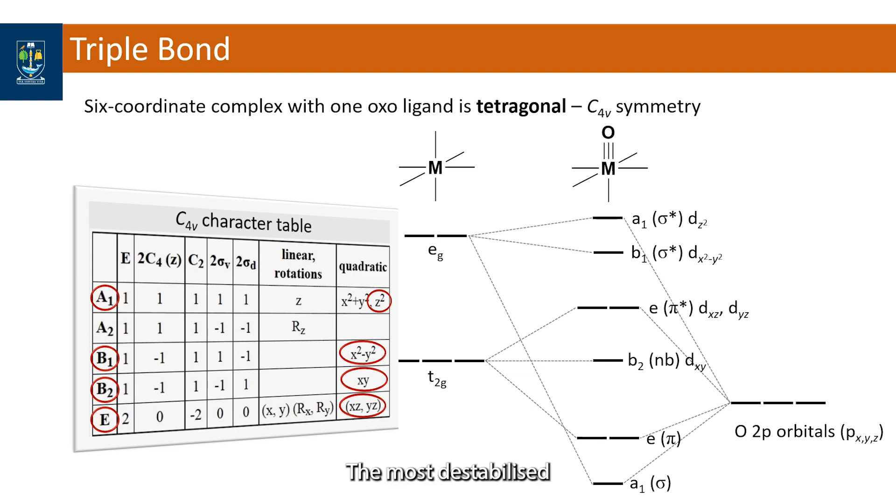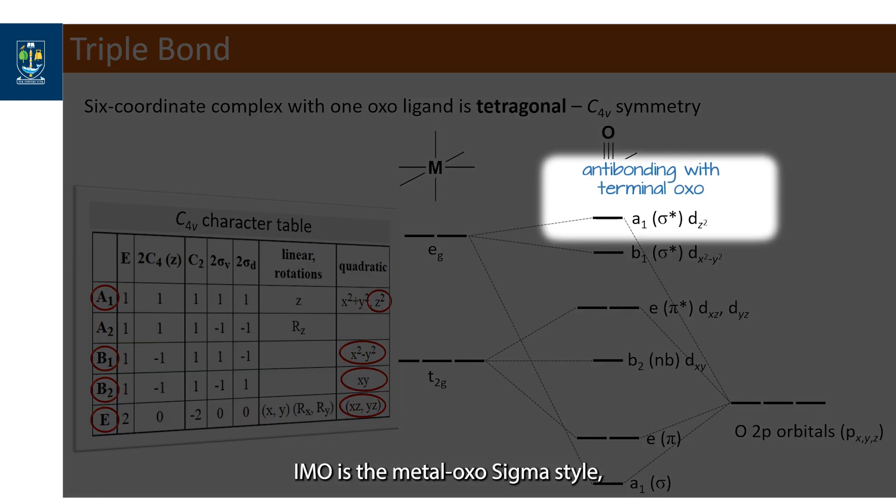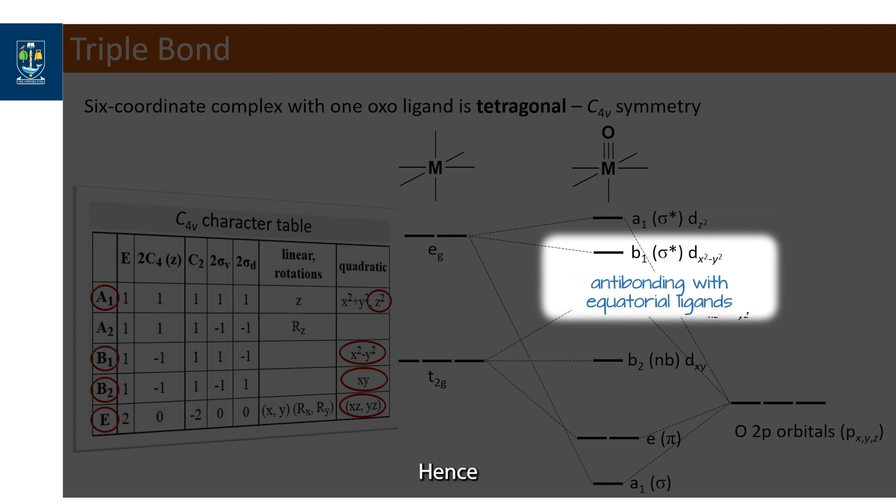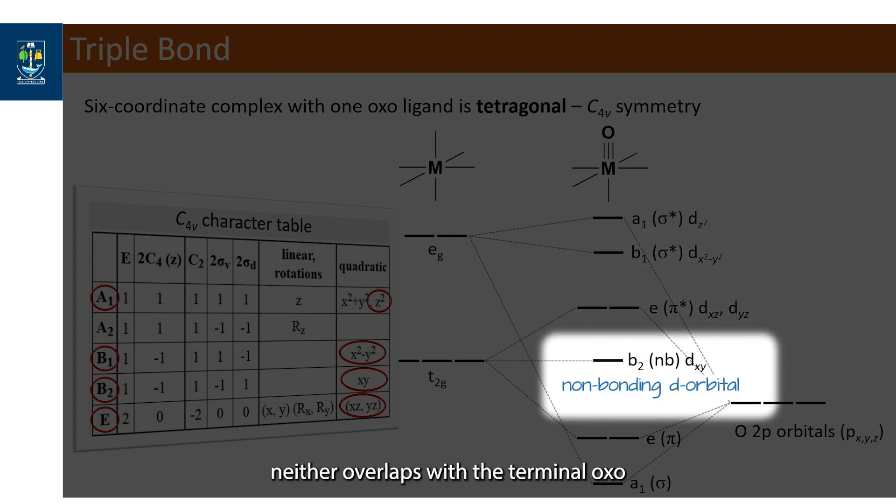The most destabilized MO is the metal oxo sigma star which is predominantly metal dz squared in character. The dx squared minus y squared is sigma antibonding with the equatorial ligands, hence there is no line connecting this to the oxygen p orbitals. The dxy orbital is non-bonding since it neither overlaps with the terminal oxo nor the other ligands in this complex.